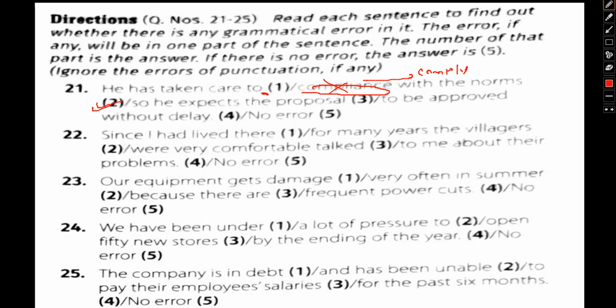Let's move on to question number 22: Since I had arrived there (1), for many years the villagers (2), were very comfortable talked (3), to me about their problems (4), and no error (5).